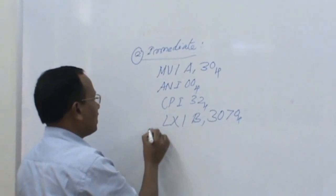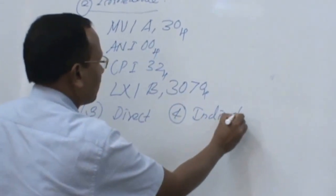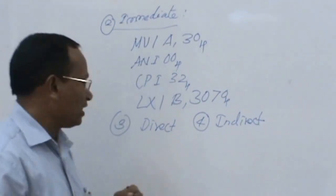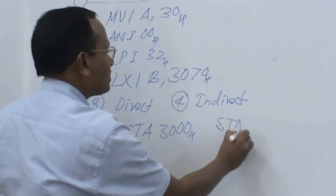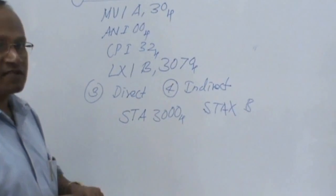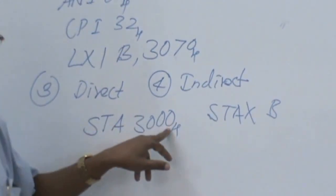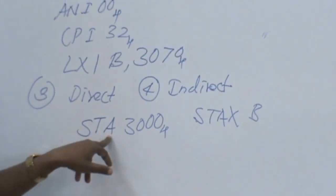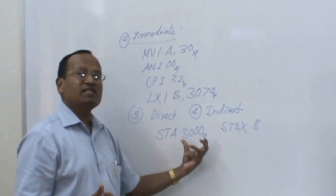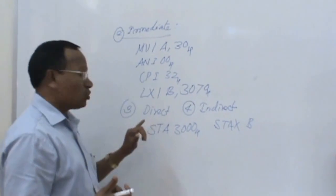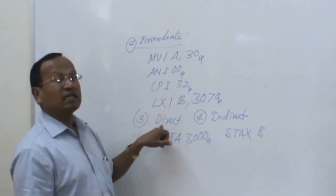Let us take direct and indirect addressing modes together. If I write STA 3000H — this is called 'store accumulator'. The 3000H is a 16-bit memory address. It means: store the content of the accumulator at the memory address specified, which is 3000H. So the operation takes place directly because the address is known — wherever the content of the accumulator is to be stored is directly given. Therefore, this falls under direct addressing mode.